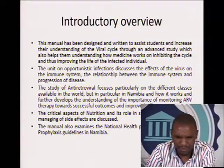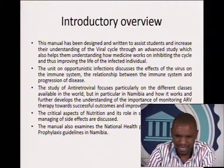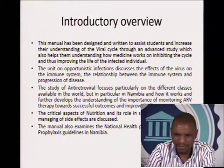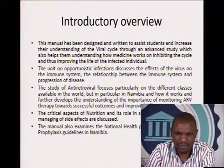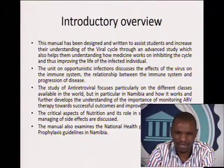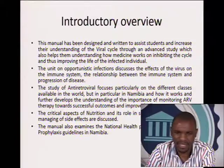This is an introductory overview. This manual has been designed and written to assist students to increase their understanding of the viral cycle through an advanced study, which also helps them understand how medicine works on inhibiting the cycle and thus improving the life of the infected individual. The unit on opportunistic infection discusses the effects of the virus on the immune system, the relationship between the immune system and progression of the disease, and the study of antiretroviral therapy focusing particularly on the different classes available in the world but in particular in Namibia.